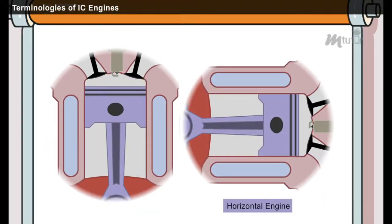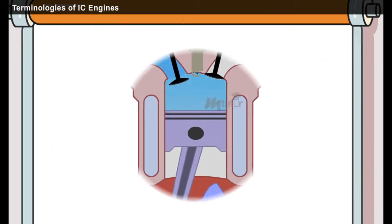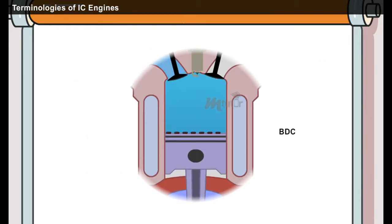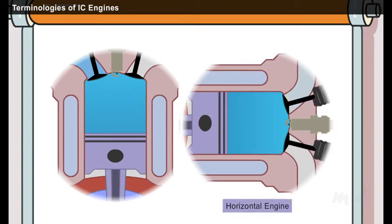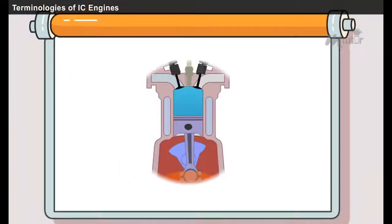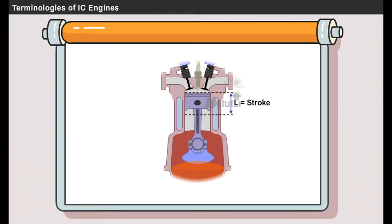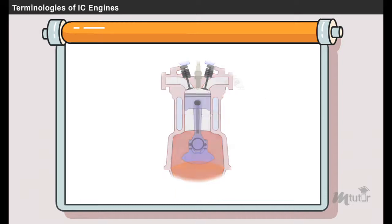In horizontal engines, this is known as inner dead center. The lowest position of the piston towards the crank inside of the cylinder is called bottom dead center or BDC. In horizontal engines, this is known as outer dead center. The linear distance along the cylinder axis between top dead center and bottom dead center is called a stroke.